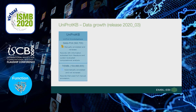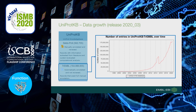The second section is called TrEMBL, and it contains computationally analyzed records that await full manual annotation. As of July, TrEMBL comprises more than 180 million records, and it keeps growing exponentially. For example, in 2014 we witnessed a two-fold increase in the number of records. This increase was accompanied by a high level of redundancy, and many sequences were over-represented in the database. Though we implemented a procedure for redundancy reduction called the proteome redundancy detector, data kept growing exponentially.